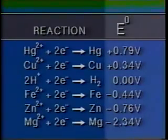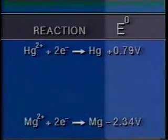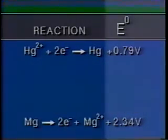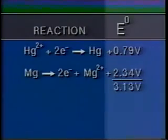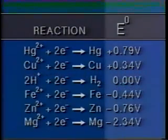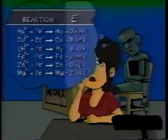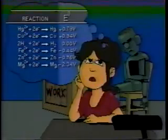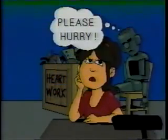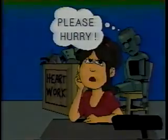By using a list of half-cell potentials, we can compare any two half-cells without actually having to construct the battery. With this background, you can set about designing a super-duper cell for your extra special cellmate.